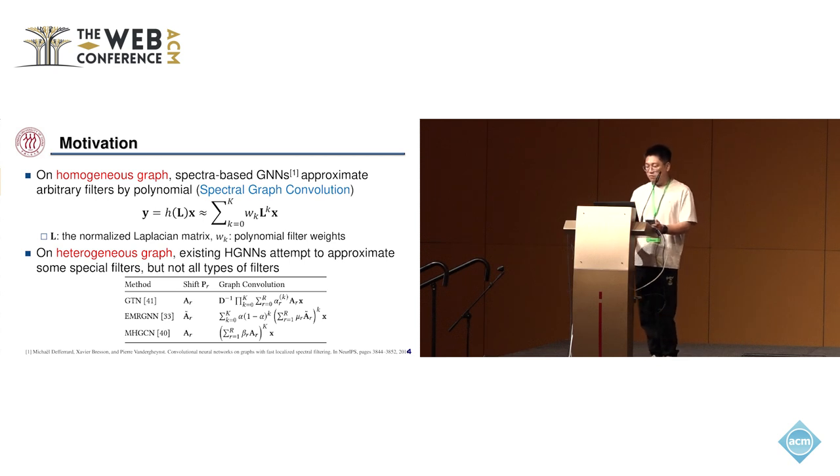Our motivation comes from two aspects. First, we recall that spectral-based GNNs on homogeneous graphs approximate arbitrary graph filters by polynomials. Specifically, the graph filter function was approximated by a polynomial with some filter weights w_p.